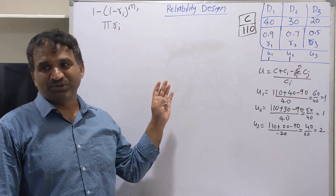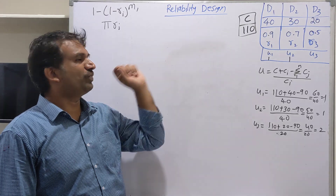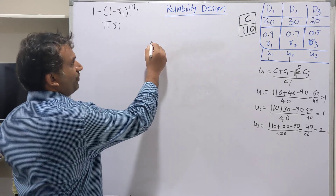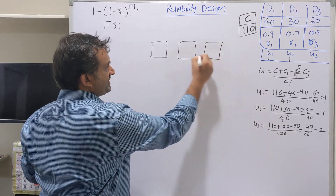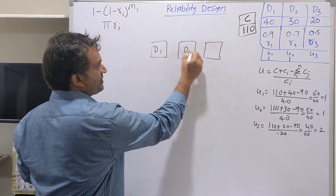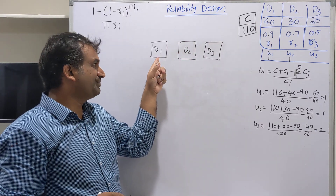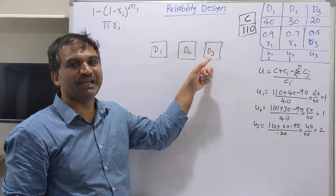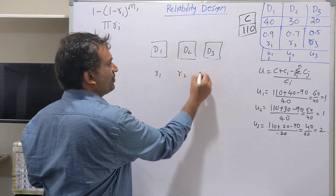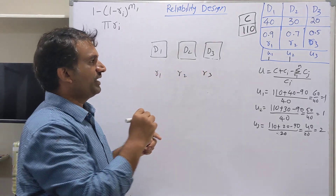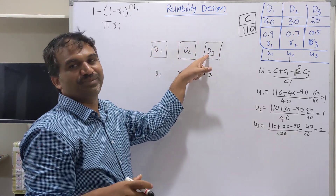Let us discuss about reliability design. Under reliability design, what do you mean by reliability design? When there is a system which has a set of devices — device 1, device 2, and device 3 — for example, a computer having memory devices, processing devices, and I/O devices, each device has some reliability R1, R2, and R3. The computer reliability depends on each individual device reliability.